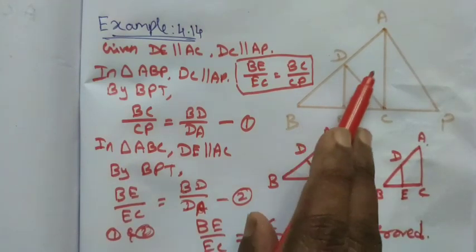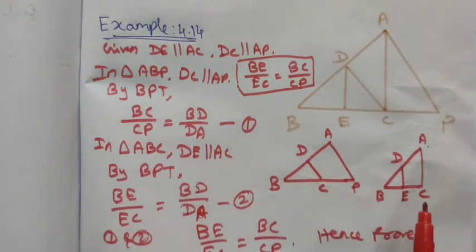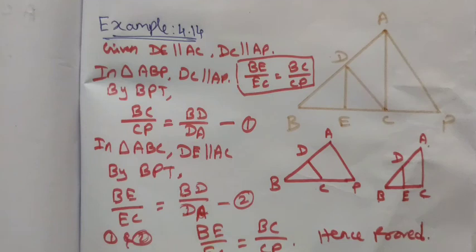Try to separate the given diagrams by different triangles — it is very easy to find the values by the Basic Proportionality Theorem. Thank you students.